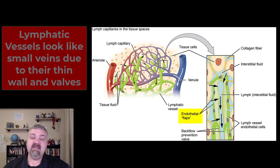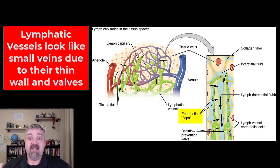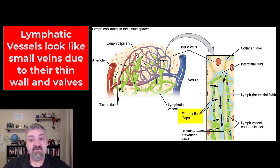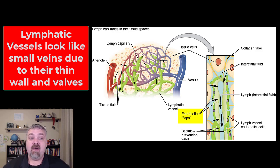You can see here on the right-hand side in this image, it actually enters through what are called endothelial flaps. We consider them valves because they prevent the backflow of fluid. So once this fluid enters a lymphatic vessel, it is now in your lymphatic system.